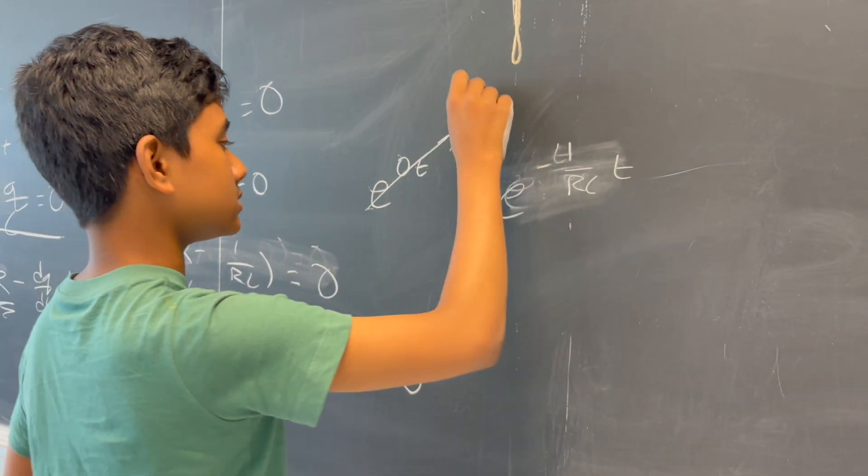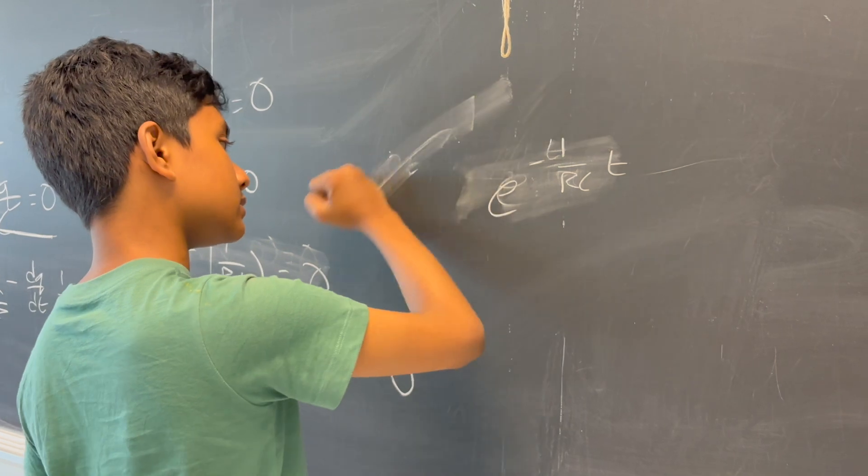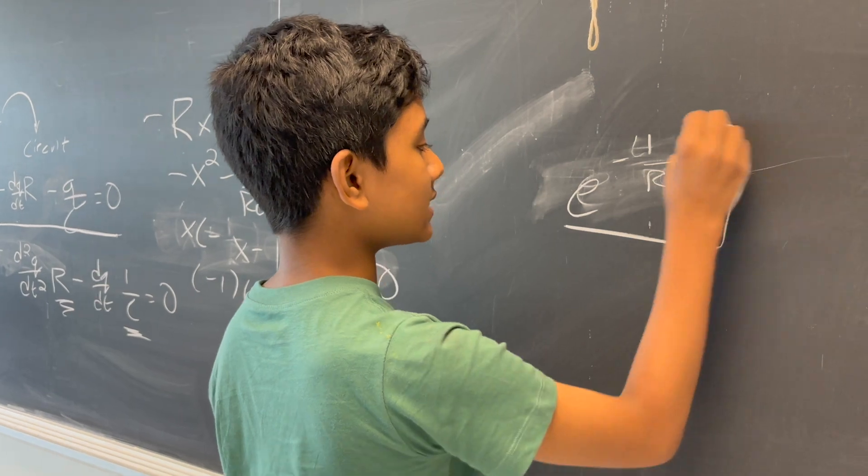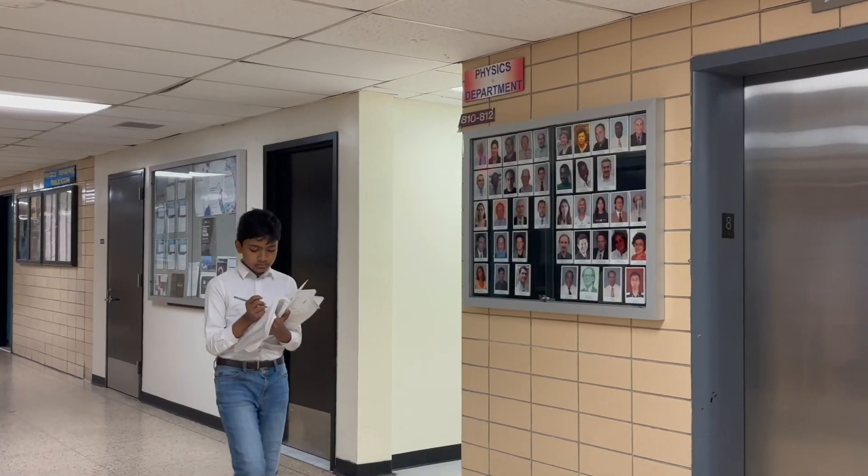Of course, this is 1, which means it's not an actually valuable solution. So, this is our actual formula. e to the minus t over RC.